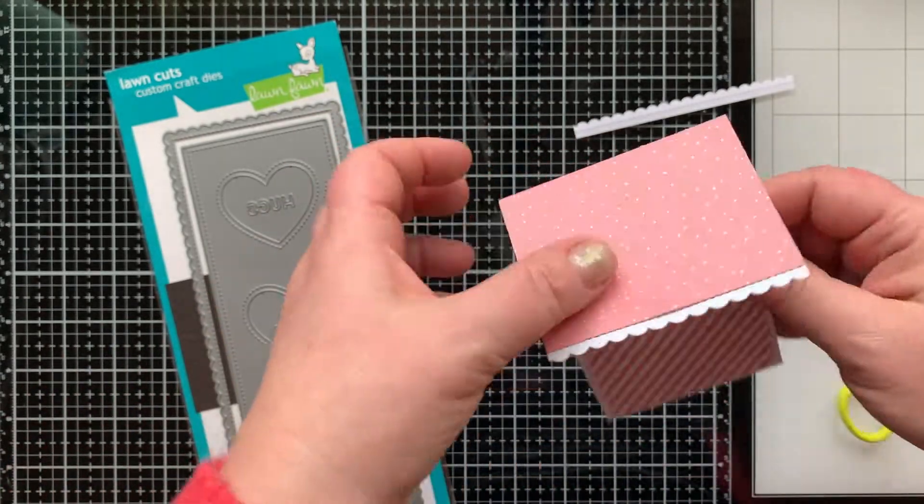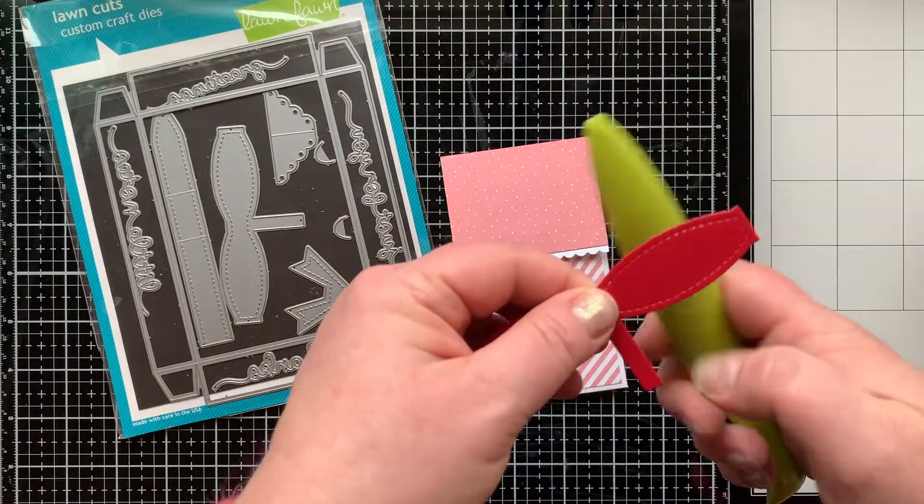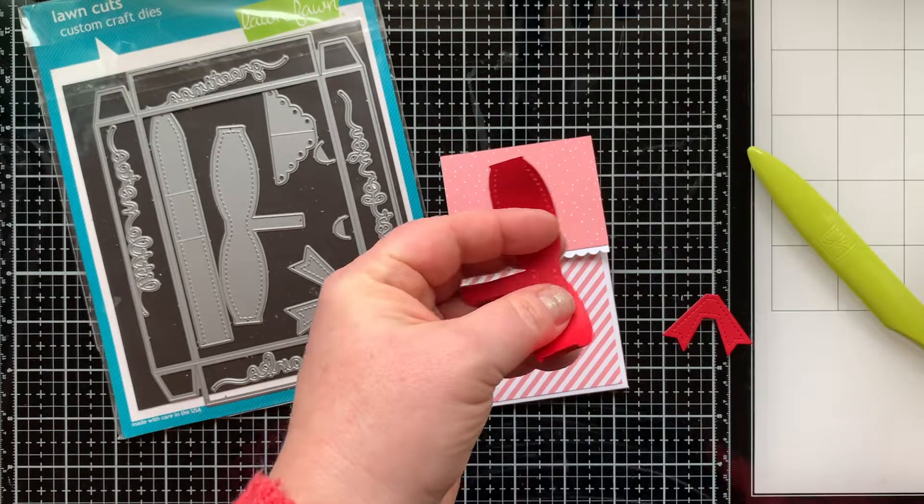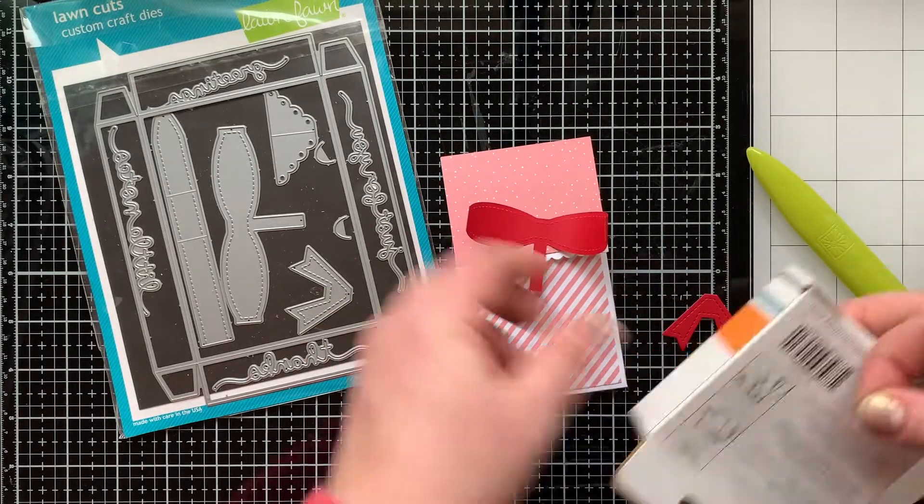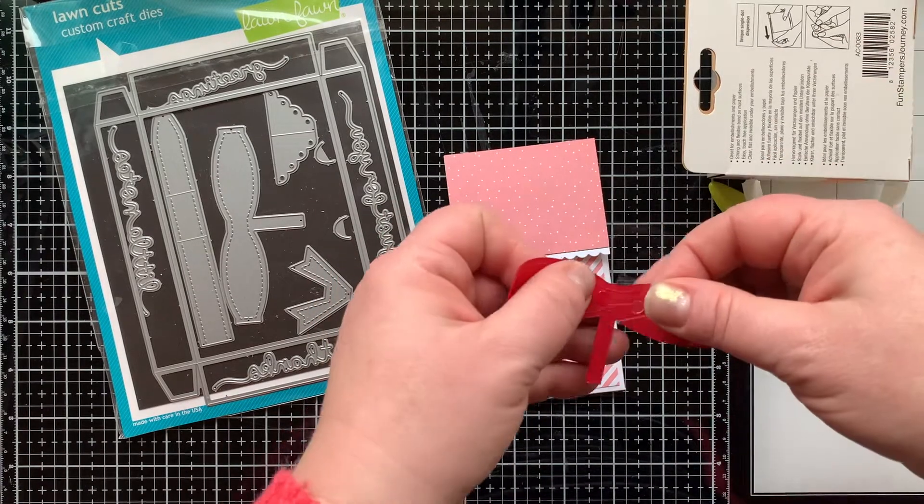Now you could make these gift card holders as easy as you want—simple, not a lot of embellishment—or you can really go to town and dress it up. One of the things I'm using to dress mine up is this die set, the Gift Box die set from Lawn Fawn, and I'm going to use just the bow to add to the top of this to make it look like a present.